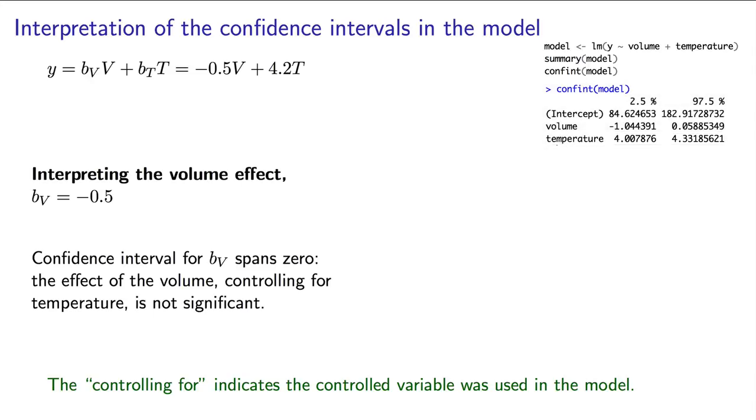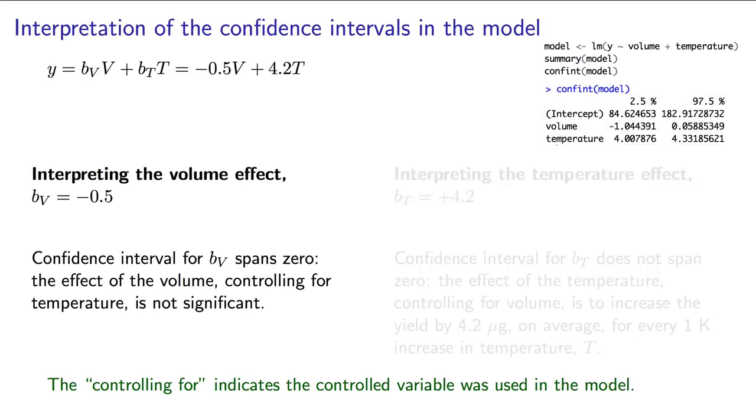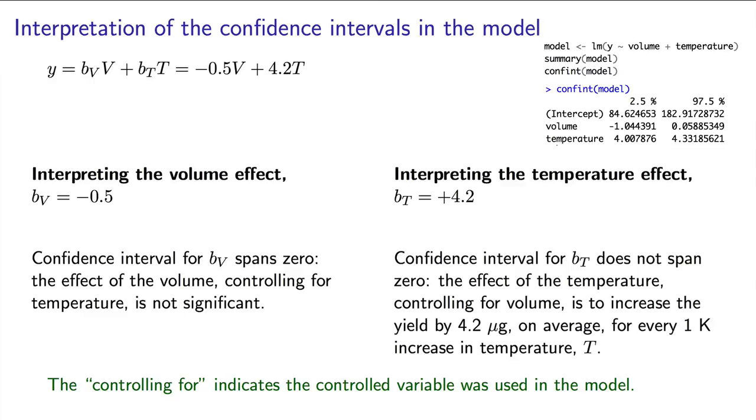So let's wrap up and look at that confidence interval now for temperature. It does not span zero. So our interpretation should be that the effect of temperature controlling for volume is to increase the yield from the reactor by 4.2 micrograms on average for every 1 kelvin increase in temperature, and that that is a significant effect.